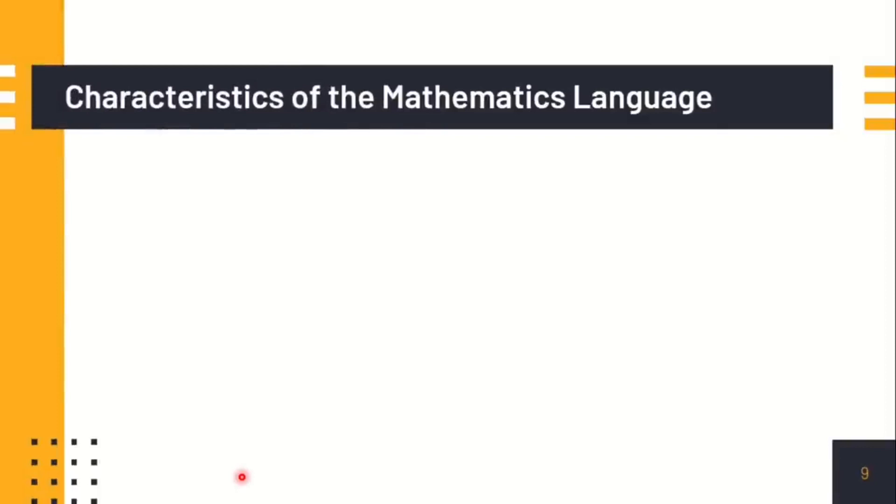What are the characteristics of the mathematical language? First, it should be precise. Meaning, you were able to create or make a fine distinction, or it should be clear and concrete.